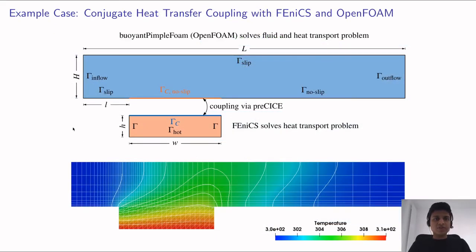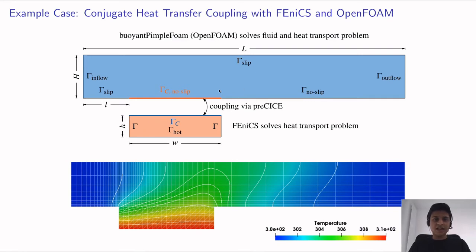This is an example of a conjugate heat transfer coupling problem with FEniCS and the CFD code OpenFOAM. There is a fluid domain touching a solid plate at a higher temperature. The solid plate is simulated using FEniCS, which solves a heat transport problem, while OpenFOAM solves the fluid side with an inlet velocity on the left. The result plots show smooth temperature contour plots indicating that the coupling is physically valid. This is a Dirichlet-Neumann coupling: FEniCS reads temperatures from OpenFOAM and writes heat fluxes back, while OpenFOAM reads heat fluxes and writes temperatures.